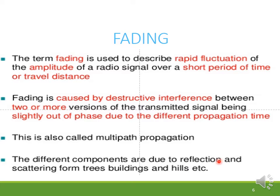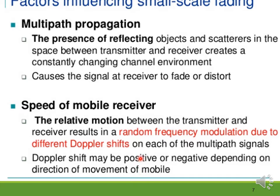This fading is also called multipath propagation, with components due to reflection, scattering, and diffraction from trees, buildings, and hills. There are two types of fading: small-scale fading and large-scale fading. Large-scale fading describes the signal level at the receiver after traveling over a large area. Small-scale fading describes the signal level at the receiver after encountering obstacles near the receiver.